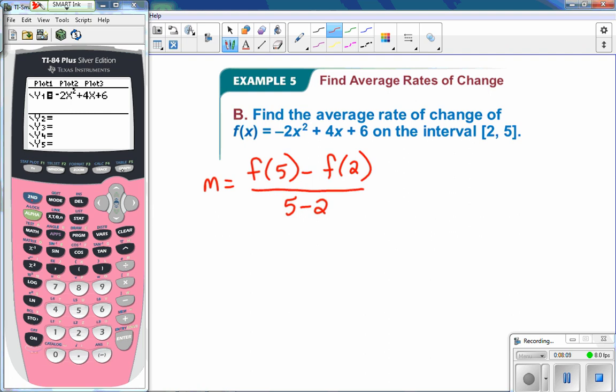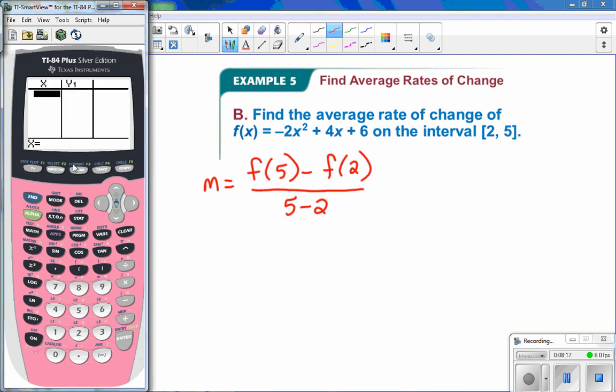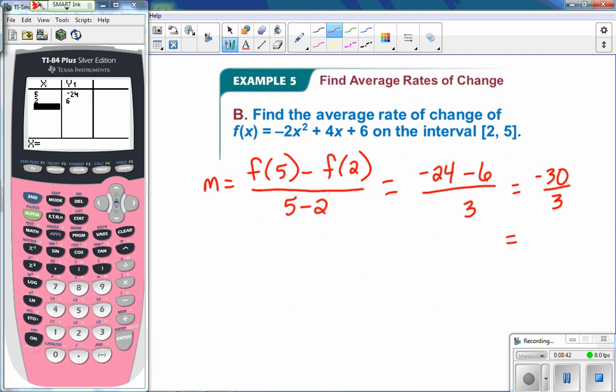Then I'm going to go to, I have this on here. Hold on just a second. Okay, so if we go second, table. Actually, I still have my table set to ask and auto. And now I can type in a 5 and type in a 2. So I'm letting my calculator do that work for me. So going on here, we get f of 5 was negative 24, f of 2 is 6, and 5 minus 2 is 3. So we get negative 30 over 3, which is negative 10. And that's my average rate of change on the interval from 2 to 5.